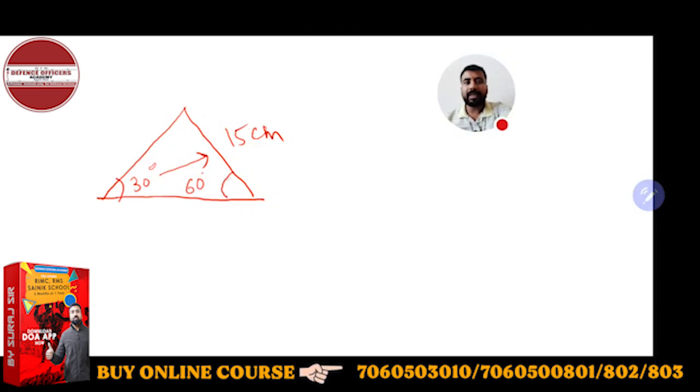And if this is 60 degree, if this is 60 degree, then the 60 degree opposite side will be double of 15, it will be 30.